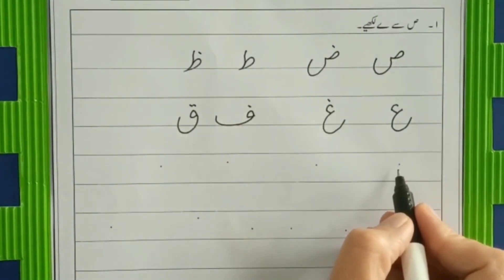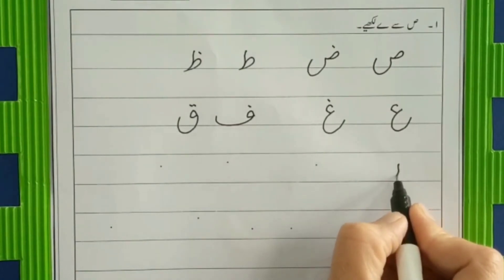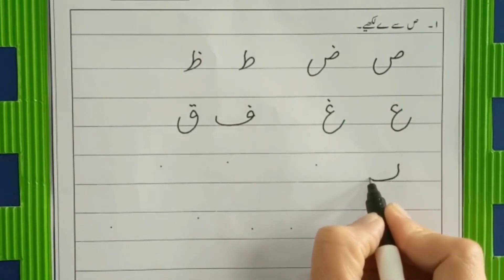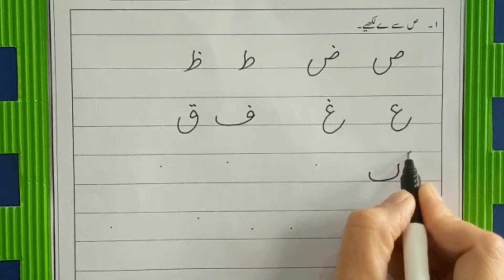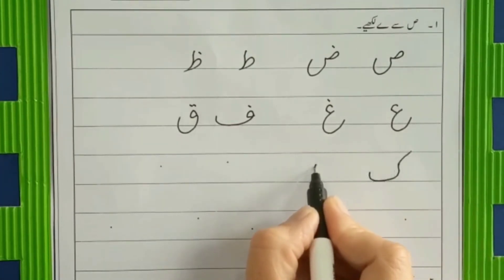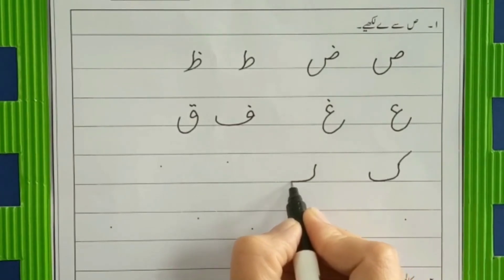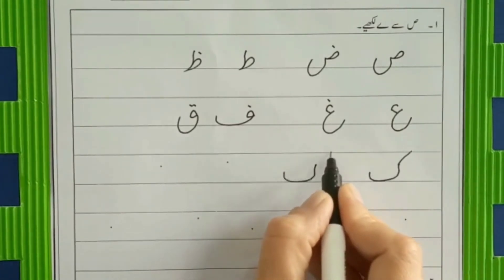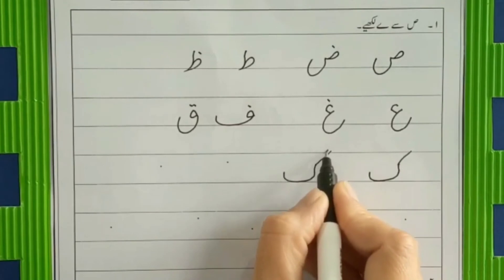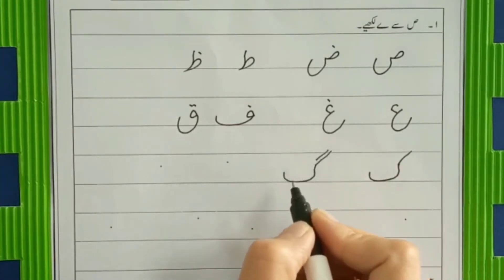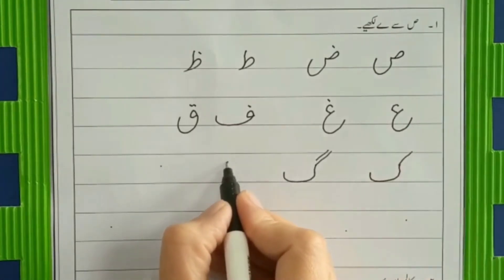And then go, soft sound. A curvy alif, then make a bae shakkal and put a kash on it. Go. And then we have ga. You can also say it kashish.